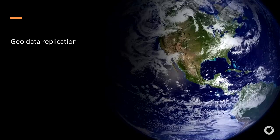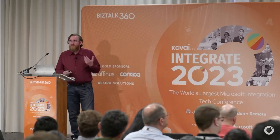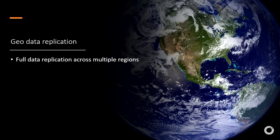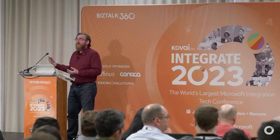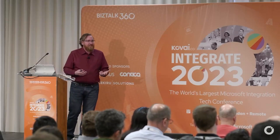The other private preview coming soon is geo data replication for message data. Currently we already have geo-DR, but it's only for metadata — we replicate your infrastructure, your queues and topics, but not the data itself. With the new data replication feature, we'll have full data replication across multiple regions. In private preview it will be one primary and one secondary; in public preview we want multiple secondaries. This allows you to fail over to a different region when something goes wrong — especially important for high-throughput scenarios with high-value messages.